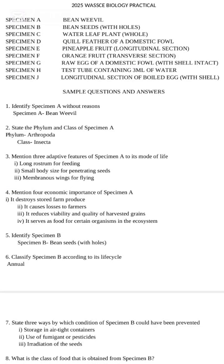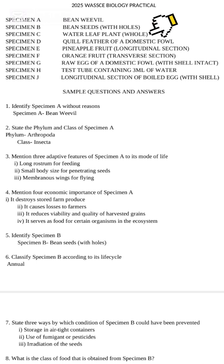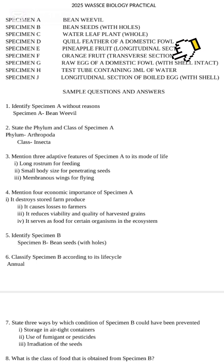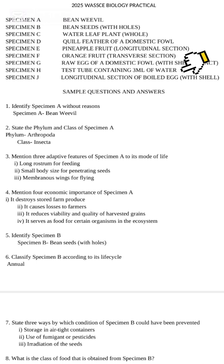Let's look at the questions and answers. These are the specimens given to students writing the 2025 WAEC biology practical. Specimen A: bean weevil. Specimen B: bean seed with weevils. Specimen C: water leaf plant, whole specimen. Specimen D: quill feather of a domestic fowl. Specimen E: pineapple fruit, longitudinal section. Specimen F: orange fruit, transverse section. Specimen G: raw egg of a domestic fowl with shell intact. Specimen H: test tube containing mill of water. Specimen I: longitudinal section of boiled egg with shell.